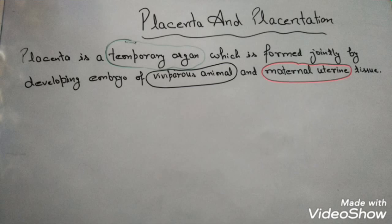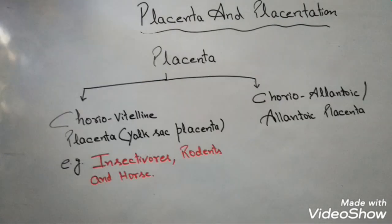Placenta is a temporary organ because after the birth of the young one, we don't need placenta at all. Secondly, placenta is always formed in viviparous animals — those animals which give birth to young ones and don't lay eggs. The third term is maternal uterine tissue. As per the definition, there are two participants in the formation of placenta: one is the fetus and another is maternal tissue, specifically the uterus.